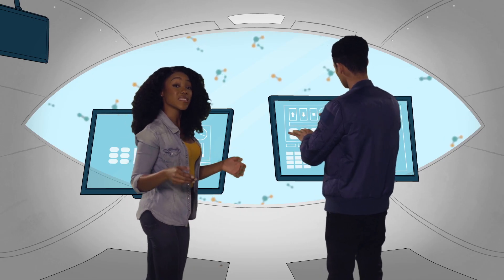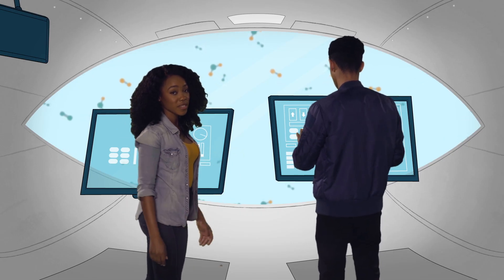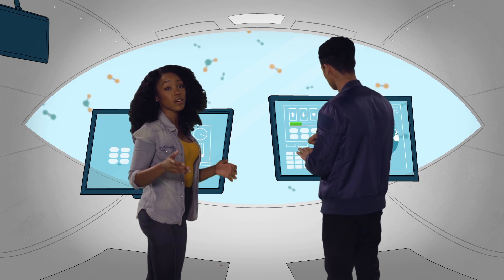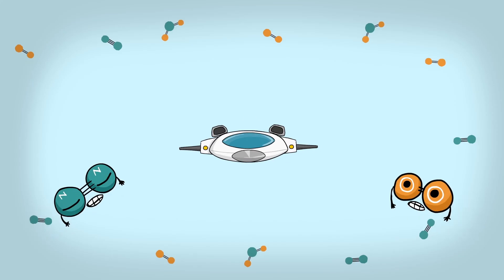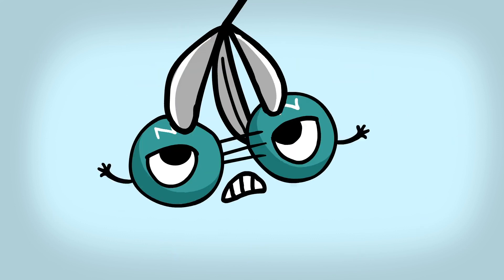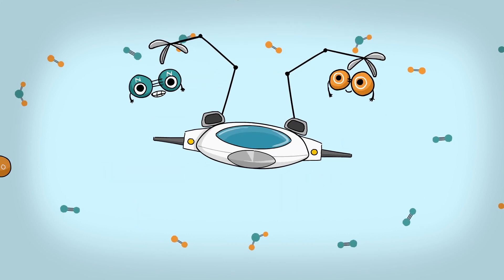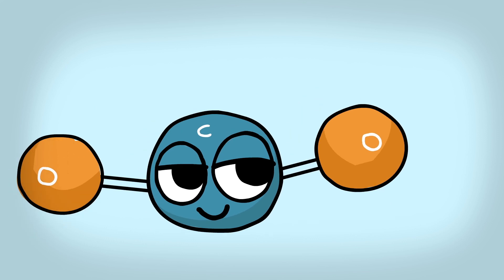While greenhouse gases make up less than 1% of the atmosphere, they're what keeps the earth from becoming a frozen wasteland. You see, these guys are small with just two atoms each, but greenhouse gases like CO2 are beefier and more complex.